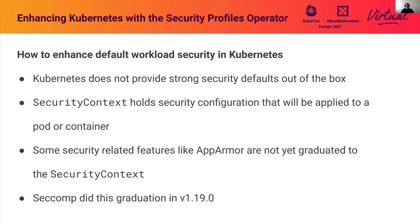The security context of Kubernetes holds a security configuration applied to a pod or container. This native API field makes security features more comfortable to use because the API server can validate fields directly. Some security-related features, like AppArmor, are not graduated to the security context yet — they still use annotation-based syntax, which is not obvious and error-prone because containers have to be referenced by name. SecComp completed this graduation to the security context in Kubernetes 1.19 and will no longer support annotations from Kubernetes 1.23.